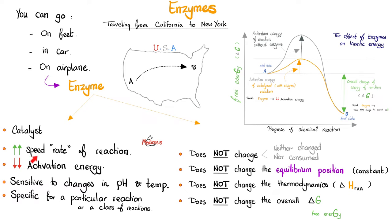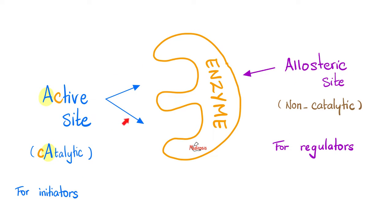Recall that enzymes boost the rate of the reaction, but they lower the activation energy. Enzymes are not changed by the reaction. They do not change the equilibrium position. They do not alter thermodynamics or the overall delta-G. Enzymes have a front door — the active site — for catalytic activity, and a back door — the allosteric site — which is non-catalytic, used for regulators.